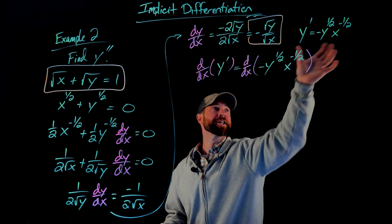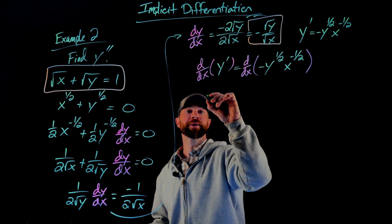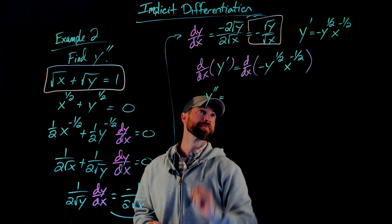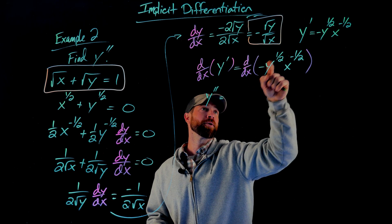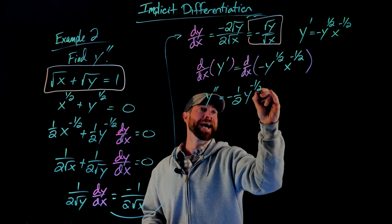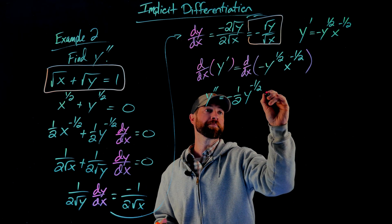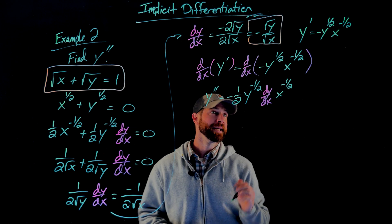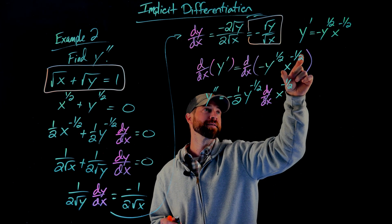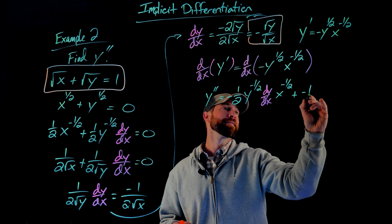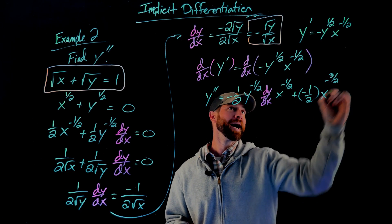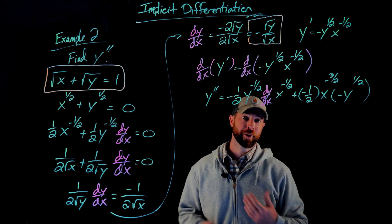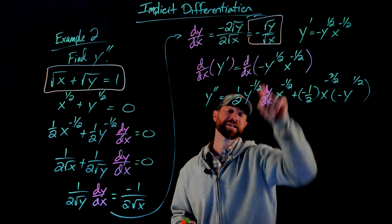If I apply differentiation to y prime, the derivative with respect to x of y prime is simply y double prime — that's the definition of the second derivative. Now I need to differentiate the right side using the product rule. Bringing the exponent down on the y term: negative 1/2 times y to the negative 1/2, and the chain rule gives a dy/dx factor. Multiplying by x to the negative 1/2 gives the first product rule term. For the second term: the derivative of x to the negative 1/2 gives negative 1/2 times x to the negative 3/2, multiplied by negative y to the 1/2. No dy/dx appears here since we didn't differentiate the y factor.